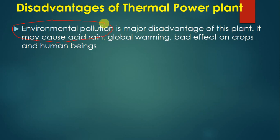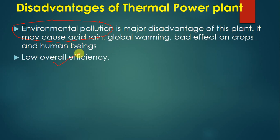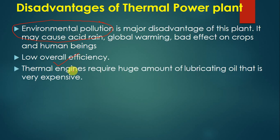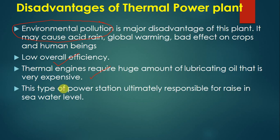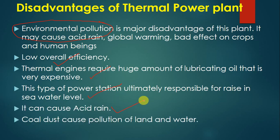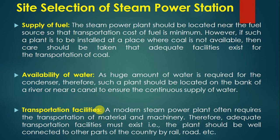The major disadvantage of this system is environmental pollution — burning coal generates a high amount of carbon dioxide, creating a big problem for the environment. Other disadvantages include low overall efficiency, thermal engines requiring a huge amount of lubrication oil which is expensive, the power station ultimately contributing to rising sea levels, and potential for causing acid rain and coal dust pollution.